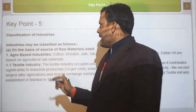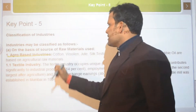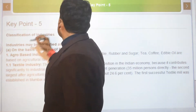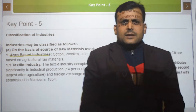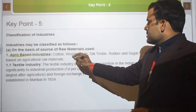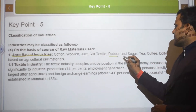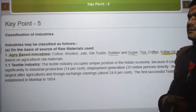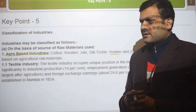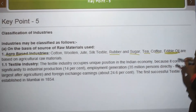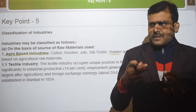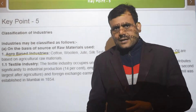On the basis of raw material, we have agro-based industries. What are agro-based industries? Agro means related to farming. Industries related to agriculture are called agro-based industries. Examples include cotton, woolen, jute, silk, textile, rubber, sugar, tea, coffee, and edible oils. Edible oils means the oil that we eat, such as mustard oil. These products are based on agriculture raw materials — that is, the finished products are made from agricultural raw materials.